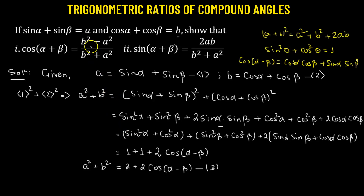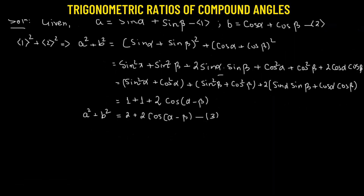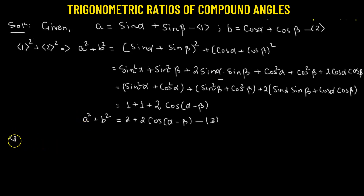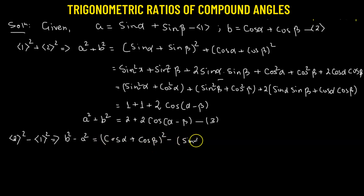Next we'll try to find out the value of b² minus a². For that, again we're going to use equations 1 and 2 to find the difference of squares. We'll take equation 2, square it, and from it subtract the square of equation 1. So we have b² minus a², where b is cosine alpha plus cosine beta squared, minus sine alpha plus sine beta squared.